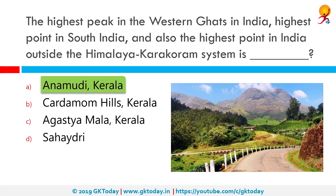Anamudi is a mountain located in the Indian state of Kerala. It is the highest peak in the Western Ghats in South India at an elevation of 2,695 meters and a topographic prominence of 2,479 meters. It lies on the border of Devikulam Taluk, Idukki district and Kothamangalam Taluk, Ernakulam district.